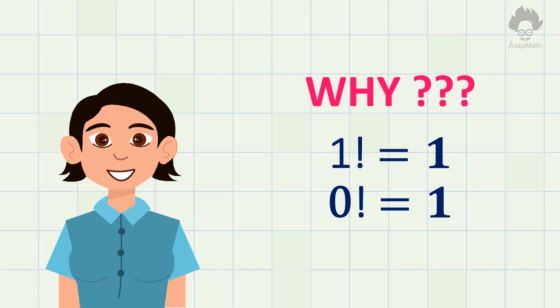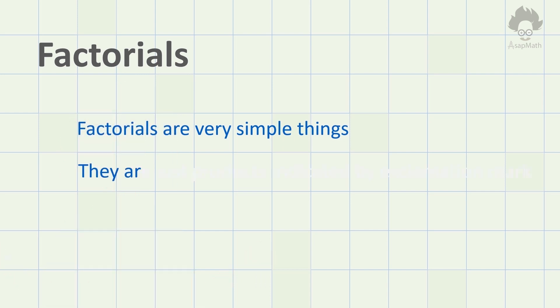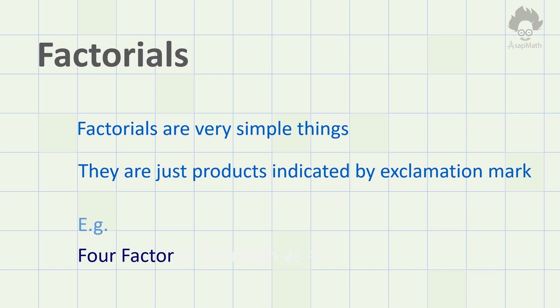Before moving on to the proof of factorial 0 equal 1, let's consider a few basic facts regarding factorials. When you see factorials in any math problem many are worried, but it's just a simple thing. They are just products indicated by an exclamation mark. 4 factorial is written by putting an exclamation mark after 4.